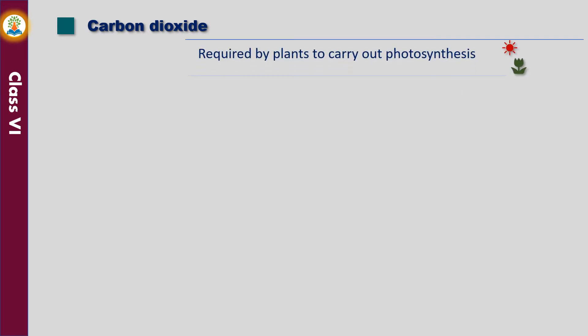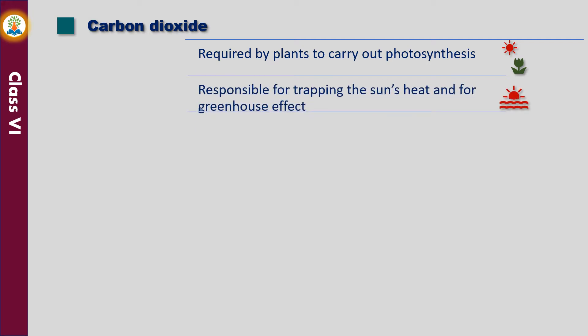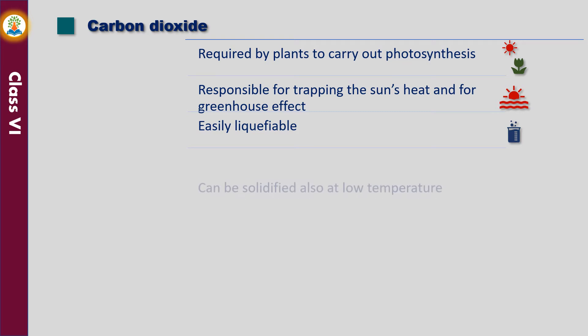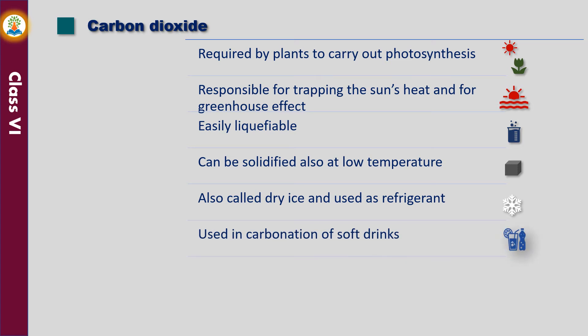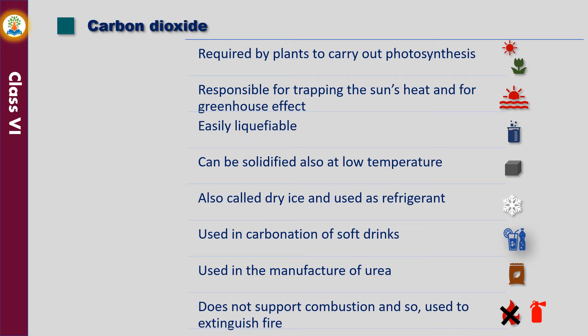Carbon dioxide is required by plants to carry out the process of photosynthesis. It is responsible for trapping the sun's heat and for the greenhouse effect. It is easily liquefiable and can be solidified at low temperature. Solid carbon dioxide shows sublimation — that is, it converts into vapors without melting. This is the reason why it is called dry ice and used as a refrigerant. It is moderately soluble in water, so it is used in carbonation of soft drinks. It is used in the manufacture of urea. It does not support combustion and so is used to extinguish fire.